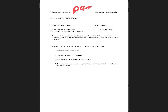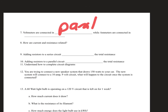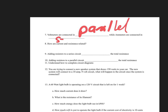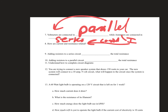Voltmeters are connected in parallel because voltage is constant in a parallel circuit. Ammeters are connected in series because current is constant in a series circuit. Adding resistors to a series circuit increases the total resistance, therefore decreasing current. Adding resistors to a parallel circuit decreases total resistance, which increases current — that's how things get dangerous, which is why you need surge protectors.